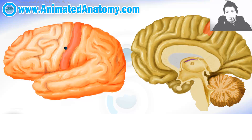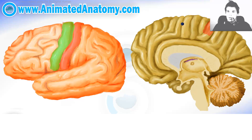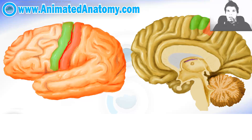Then we have the primary motor cortex and it's in the pre-central gyrus here. You can notice the same functional area on the other side of the brain. The reason this is called the post-central and this is the pre-central is because of the central sulcus here — the gyrus behind it is the post-central and the gyrus in front of it is the pre-central gyrus.